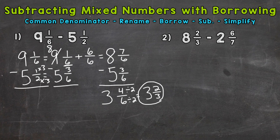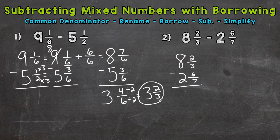Let's go on to number two, where we have eight and two-thirds minus two and six-sevenths. Let's set it up vertically: eight and two-thirds minus two and six-sevenths. Can we subtract those fractions as is? No, we need a common denominator. The least common denominator for three and seven is going to be 21, so let's rename.